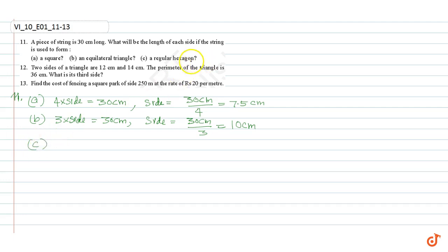A regular hexagon. We know that a regular hexagon has 6 equal sides, so 6 times side is given to be equal to 30 cm. Therefore, side equals 30 divided by 6, equal to 5 cm.